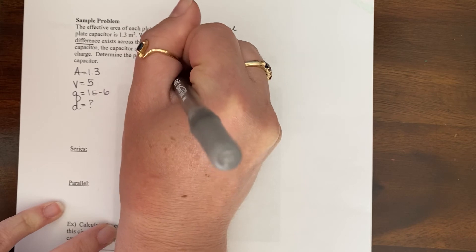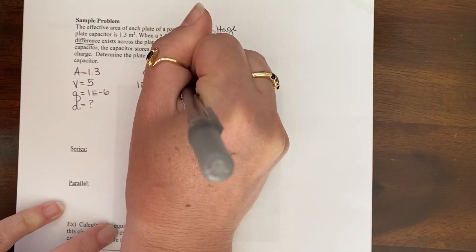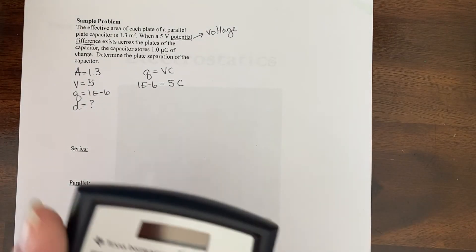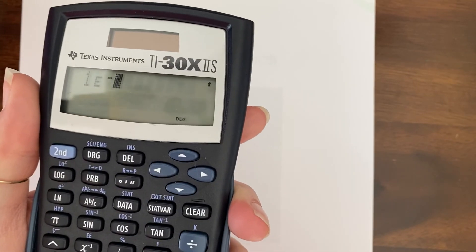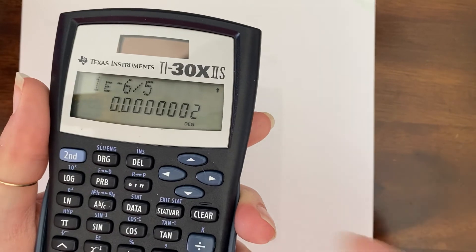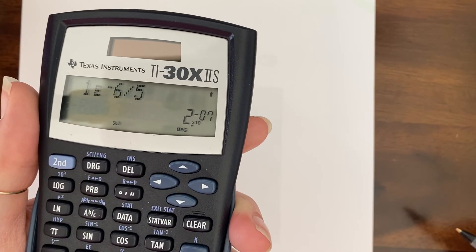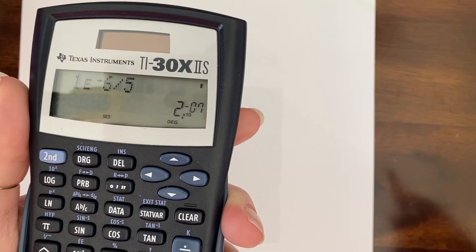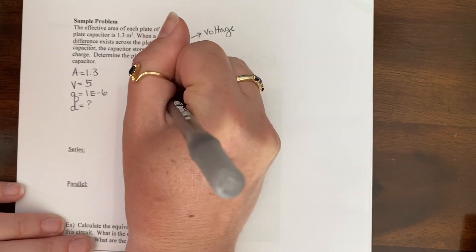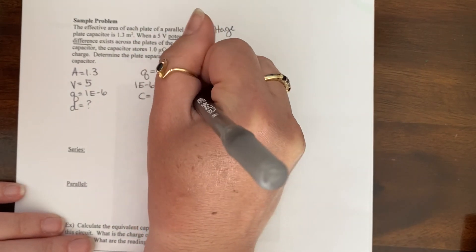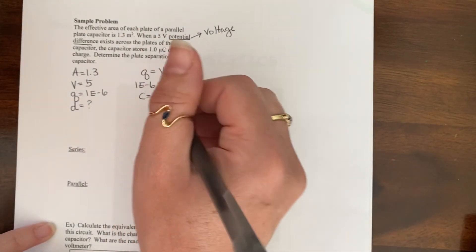All right. So I'm going to start with Q equals VC or one E to the negative six equals five C. So if I take and divide one E to the negative six divided by five, I should get, oh, what scientific notation that I get two E to the negative seven. So my capacitance, we said it was going to be small, which makes sense. Two E to the negative seven F.